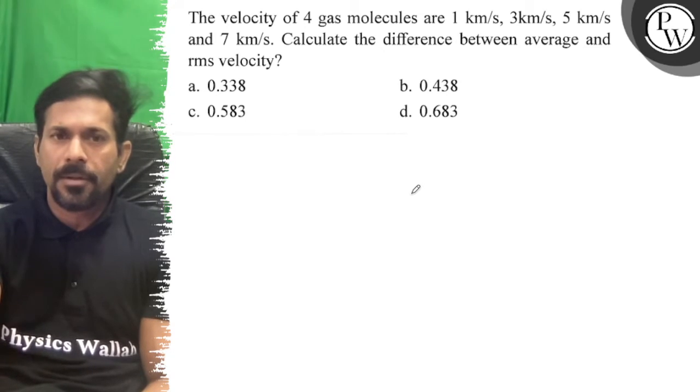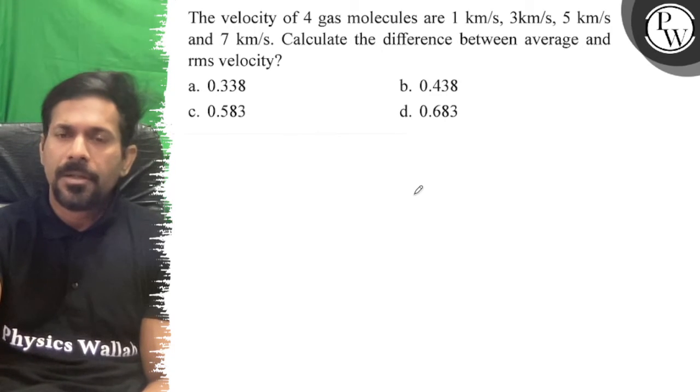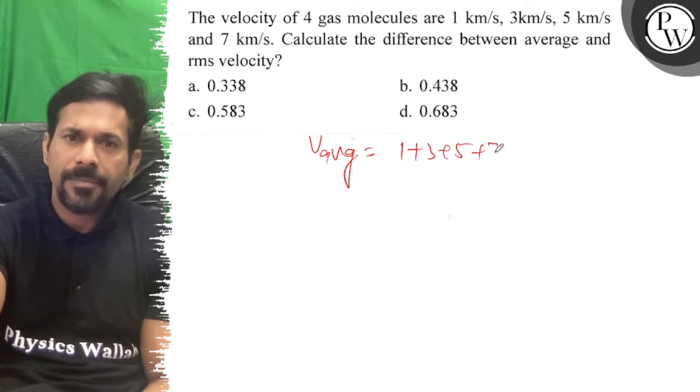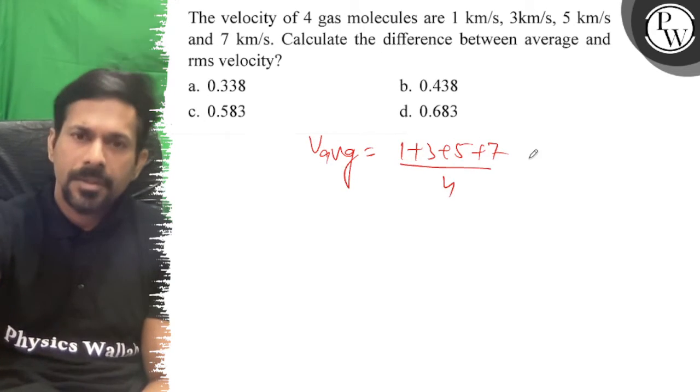Hello, let's see the question. The velocity of four gas molecules are 1, 3, 5, and 7. Calculate the difference between the average and rms. The average: 1 + 3 + 5 + 7 by 4, so that is 16.